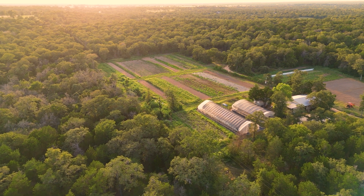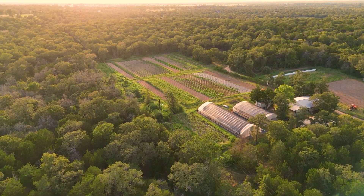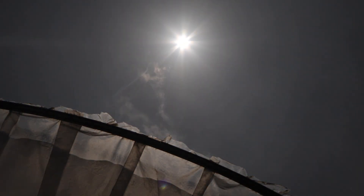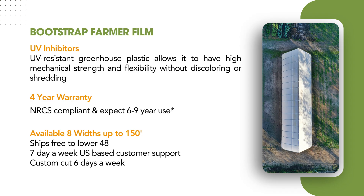The variables always matter in farming — we're all in different states, at different elevations, with different exposures for wind and weather and different longitude and sun intensity. As we make these videos, we always try to give a framework of things to think about and consider. While we're talking about greenhouse plastic and what UV does to it — both to the plastic itself and to the plants — these are all things to consider as you're making your selections and budgeting for your farm. Bootstrap Farmer film does have UV inhibitors; it allows the plastic to have high mechanical strength and flexibility without discoloring or shredding.